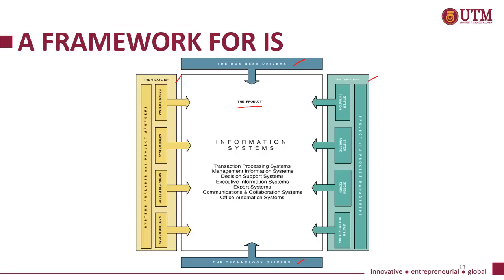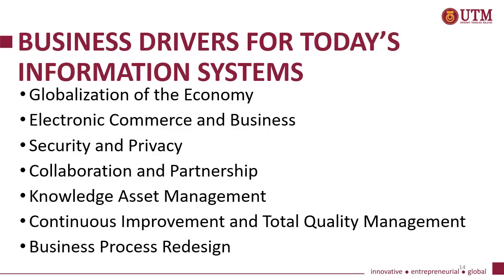There are several types of information systems. We have transaction processing systems, management information systems, decision support systems, executive information systems, expert systems, communication and collaboration systems, and office automation systems.